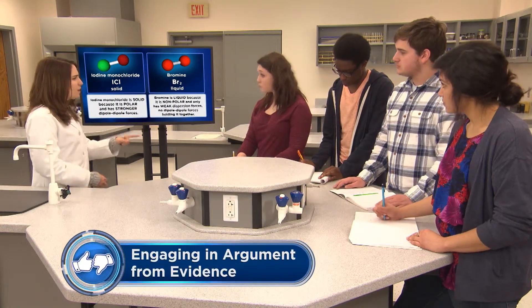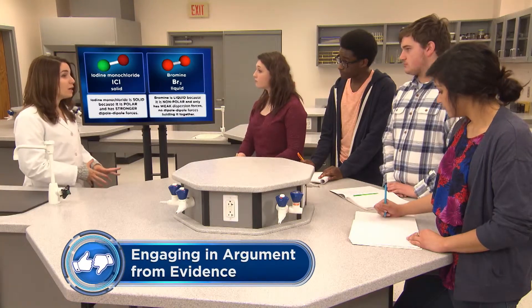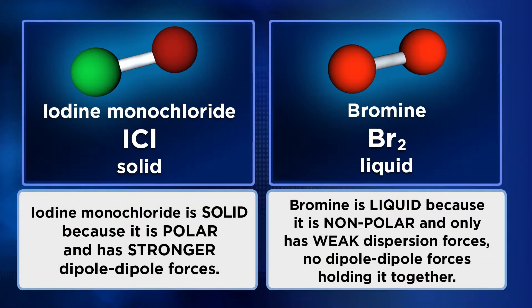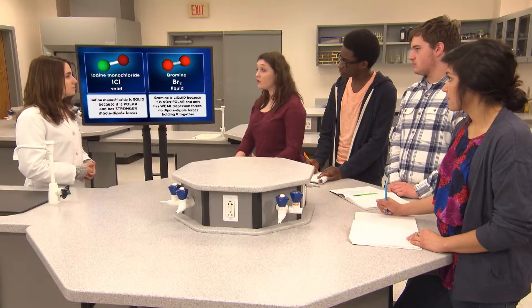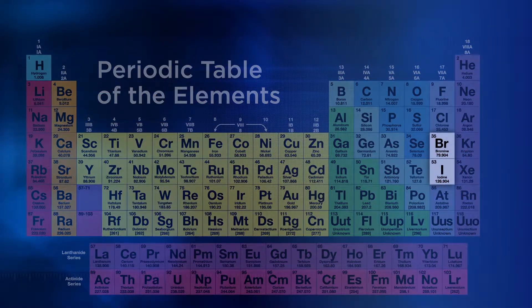When we compare the dipole-dipole forces of iodine monochloride to the dispersion forces in bromine, the dipole-dipole forces seem to be the more important force. But didn't you say dispersion forces are stronger the larger the atoms are? I don't think bromine is large enough for the dispersion forces to be more important. If you look at the halogen right below bromine - iodine - we see that it's a solid at room temperature. You're absolutely right, Emily. And don't forget, there are dispersion forces present in all substances.